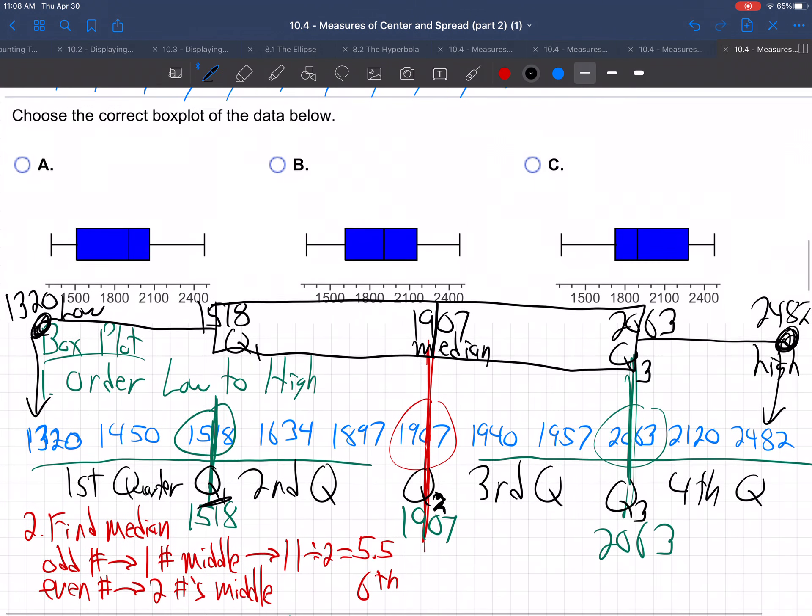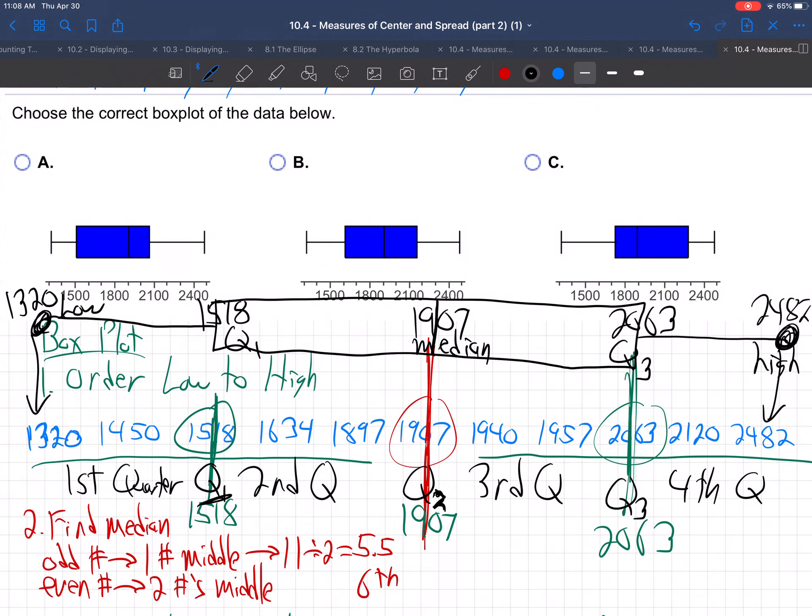So which one of those is actually right? Which one has 1518? Let's look at the 1518. Just above, the left edge of the box should just be barely above 1500. See how the left edge of this box is way above 1500. No way. Here's 1500. Here's the left edge of the box. It's hitting it like 1600. No way. See how the left edge of this box is right, just barely above 1500.